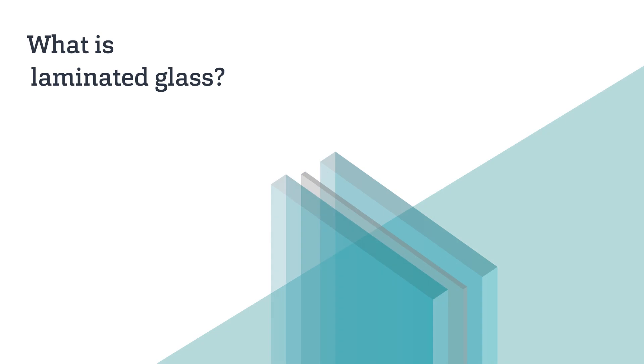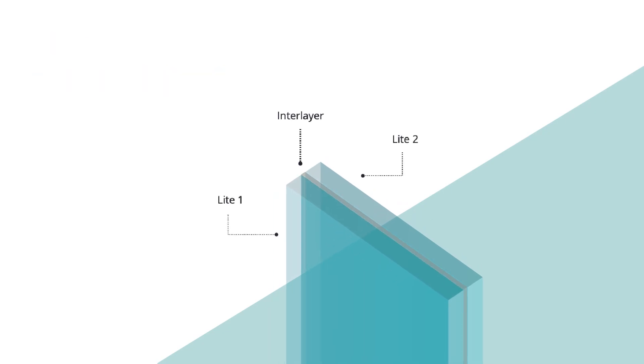Laminated glass consists of two or more glass lights permanently bonded together with polymer interlayers using heat and pressure.